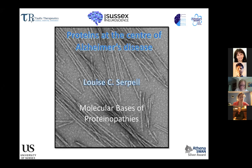What I wanted to talk about today is the proteins at the centre of Alzheimer's disease. I know that this audience doesn't need a huge amount of introduction, so those are some of the slides I will skip through. But just to mention that in the background here is an electron micrograph showing paired helical filaments formed from the protein tau — a fragment of tau — and I'm going to say a bit more about those towards the second half of the talk.